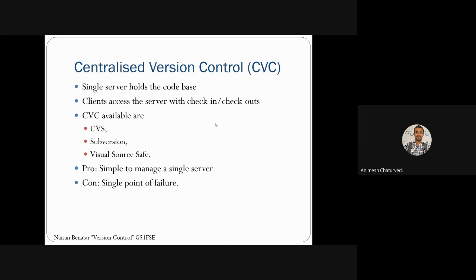There are two types of version control systems. The first is the central version control system. In this, there is a single server that holds all the code base. Clients access that server and check in and check out — meaning they push the code and pull out the code.